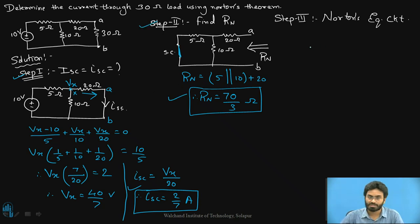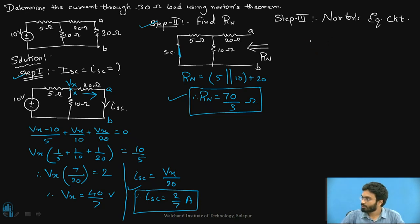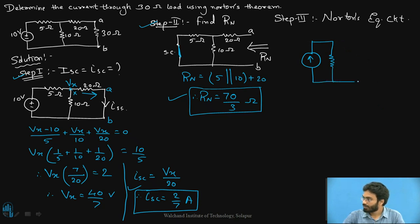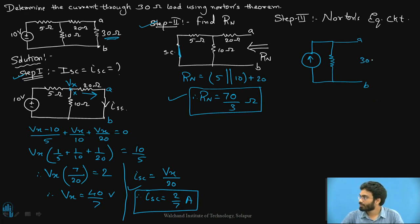The final step is to draw the Norton's equivalent circuit. Norton's equivalent circuit is represented by a current source in parallel with the Norton's resistance Rn. The Norton's current Isc = 2/7 A is shown in parallel with Rn = 70/3 ohms, and the load of 30 ohms — which we eliminated in step one — is reconnected in parallel.